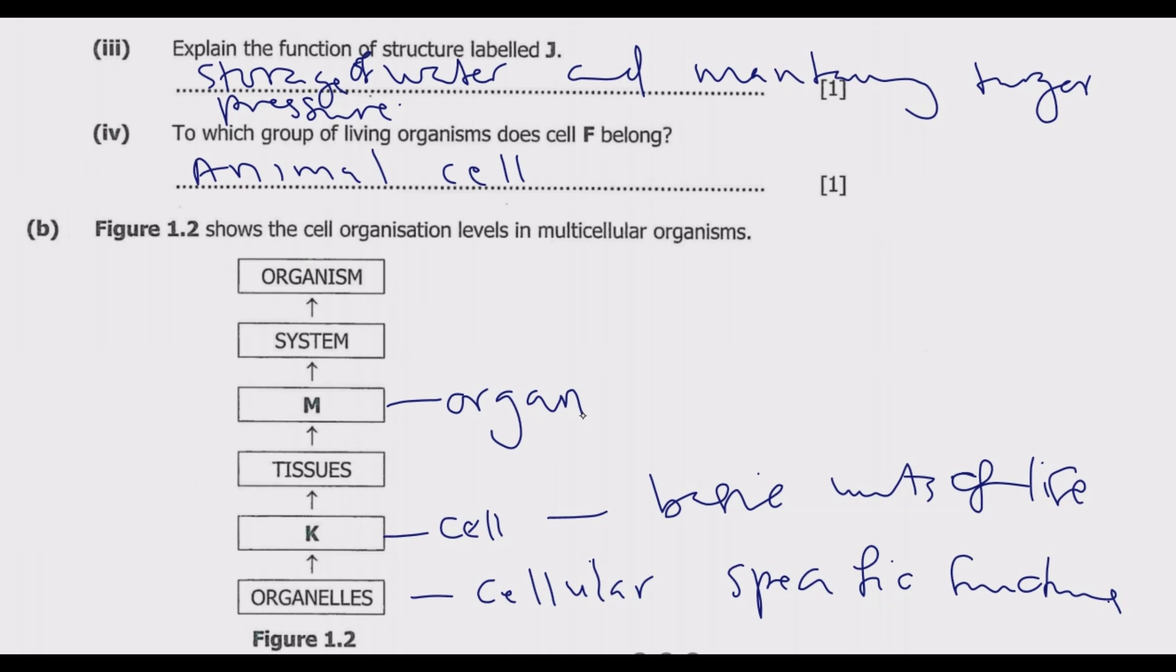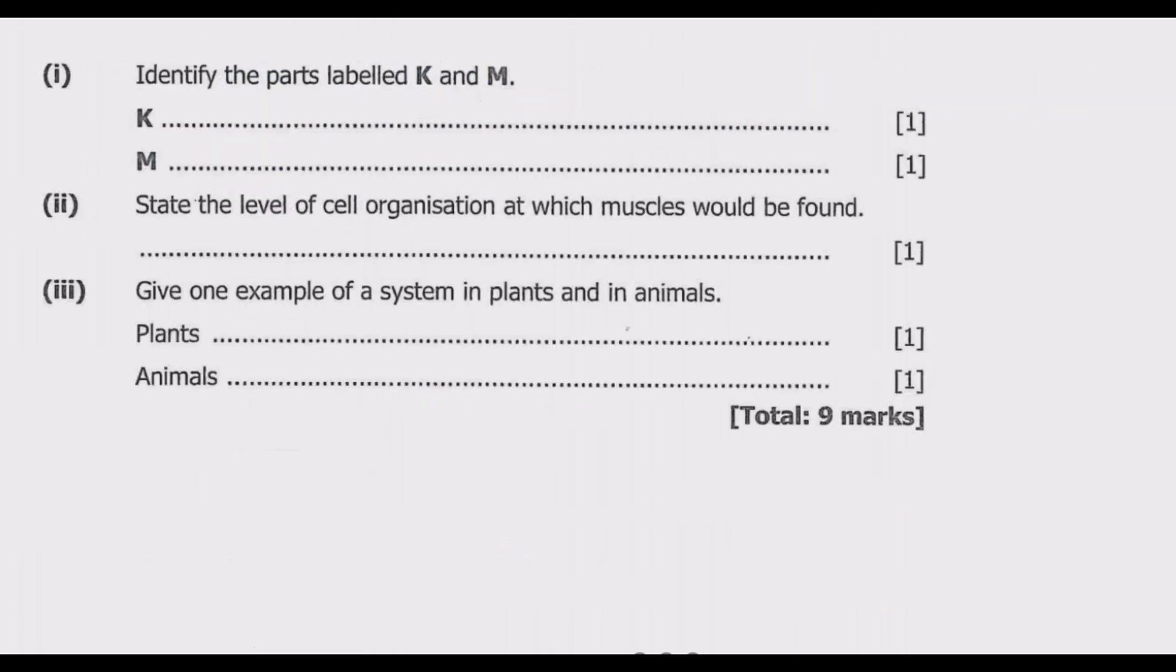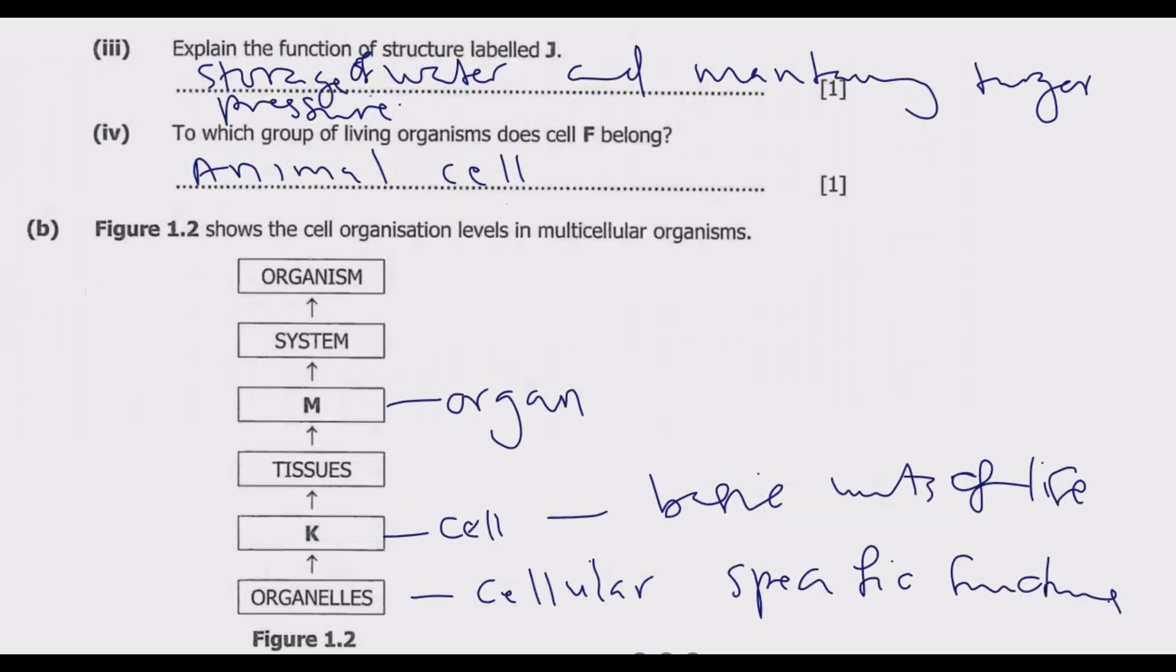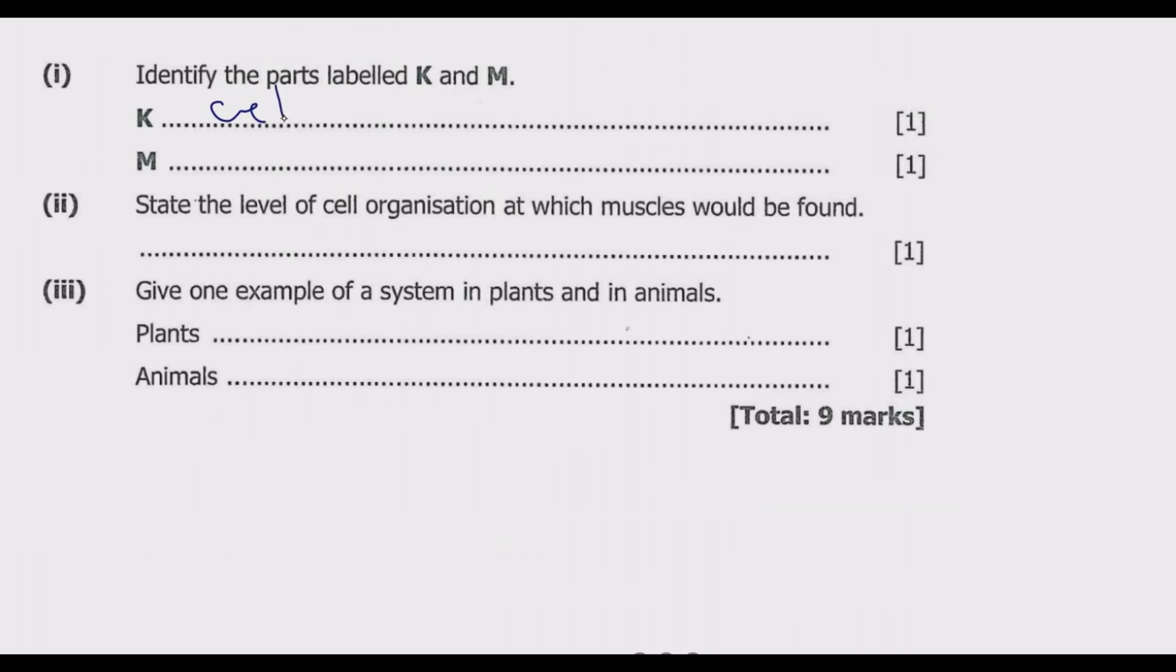Organism refers to a living thing that has an organized structure. Now let us look at the question from section B: identify the parts labeled K and M. K we identified to be the cell, then M is the organ.